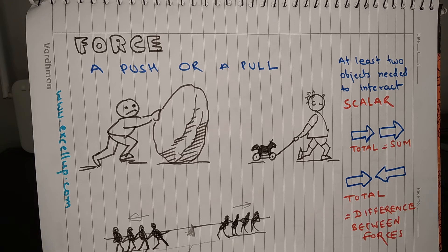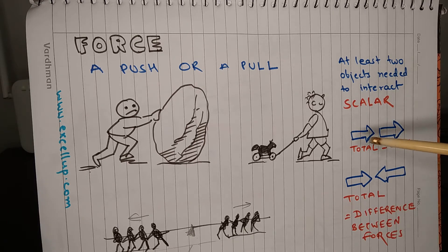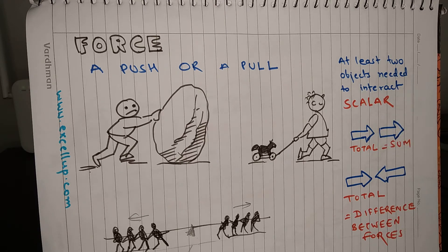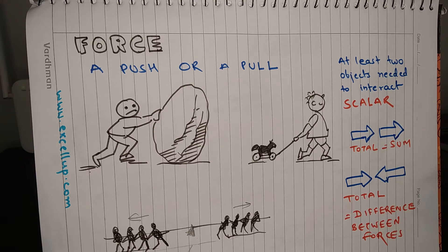In real life, more than one force is always acting on an object. To simplify, let us assume two forces are acting on an object. If both forces act in the same direction, then the net effect will be the sum of the forces. And if the forces act opposite to each other, then the net effect will be equal to the difference between the forces.